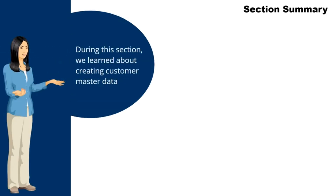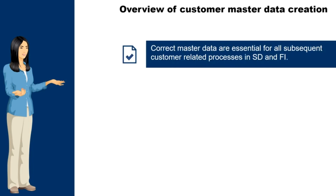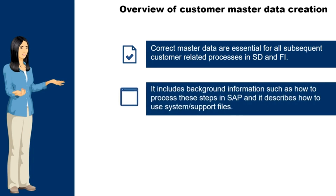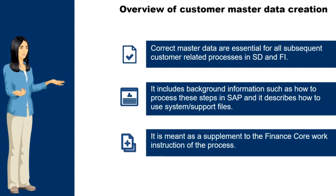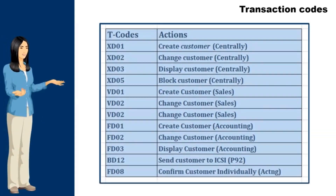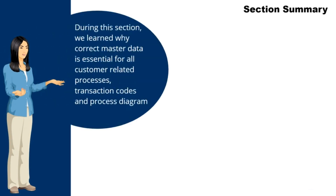During this section, we learned about creating customer master data in SAP. The purpose of this training is to describe the processes of creating and maintaining relevant parts of customer master data. Correct master data are essential for all subsequent customer-related processes in SD and FI. It includes background information such as how to process these steps in SAP and describes how to use system or support files. It is meant as a supplement to the finance core work instruction of the process. Here are some commonly used transaction codes for managing customers in SAP. During this section, we learned why correct master data is essential for all customer-related processes, transaction codes, and the process diagram.